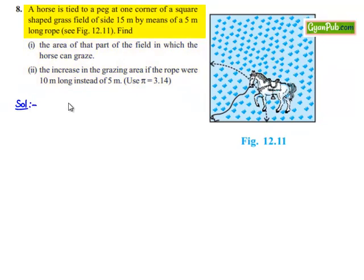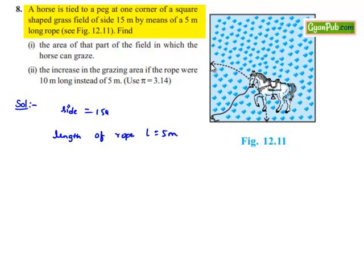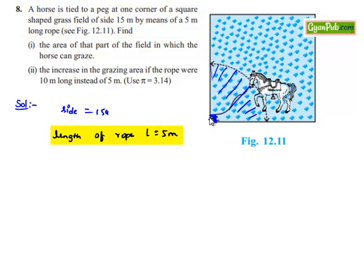Moving on to the solution: a square grazing field is given with side 15 meters. The length of the rope to which the horse is tied is 5 meters. Observing the figure clearly, the horse can graze through a sector subtending an angle of 90 degrees at one of the edges of the square. Therefore, the area in which the horse can graze is a sector subtending 90 degrees at the center, and the radius equals the length of the rope, that is 5 meters. Theta is equal to 90 degrees.